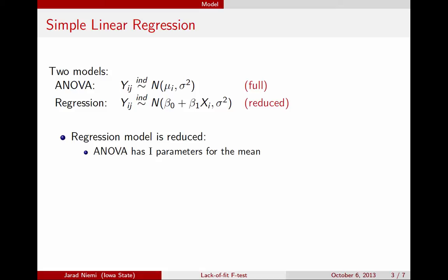First off, the ANOVA model has capital I parameters for the mean. We have a different mean for each group. There are capital I groups, so there are capital I parameters for the mean. The regression model has two parameters for the mean, beta_0 and beta_1. These are the parameters that describe the line. So if capital I here is more than two, which it typically is in an ANOVA setting, then we have more parameters for the mean in the ANOVA model than we do for the regression model. Now this alone would not make the ANOVA model full and the regression model a reduced version of that.